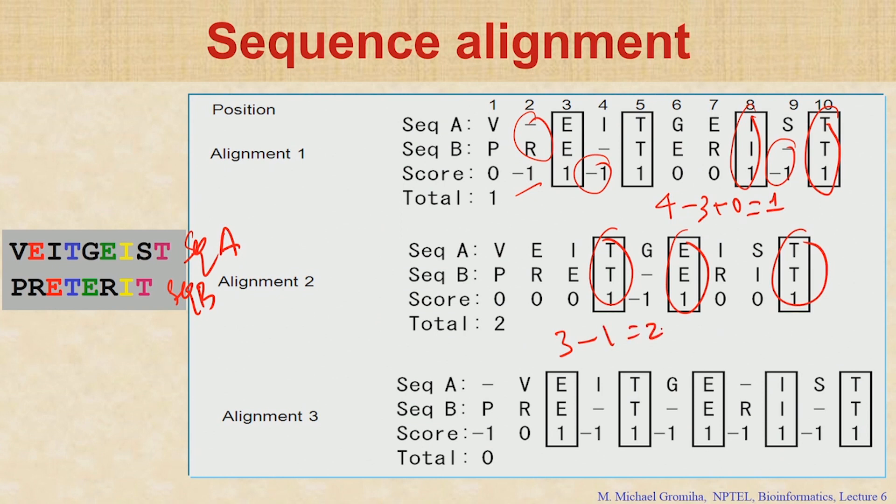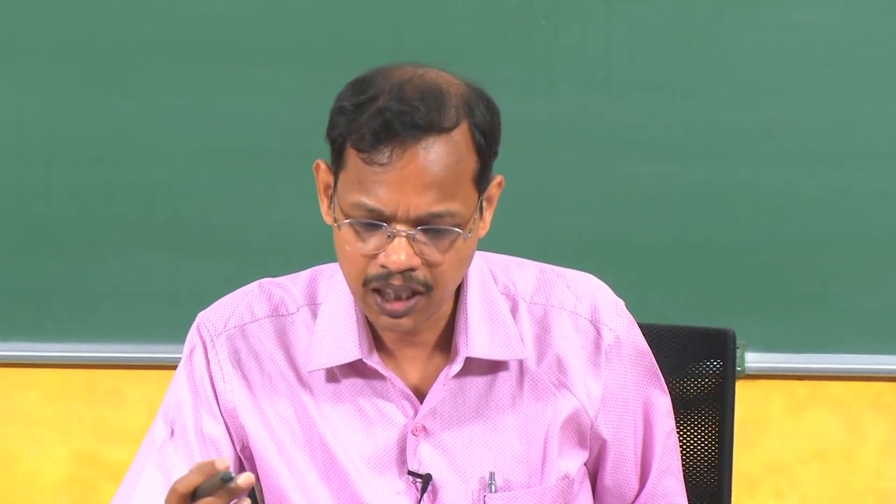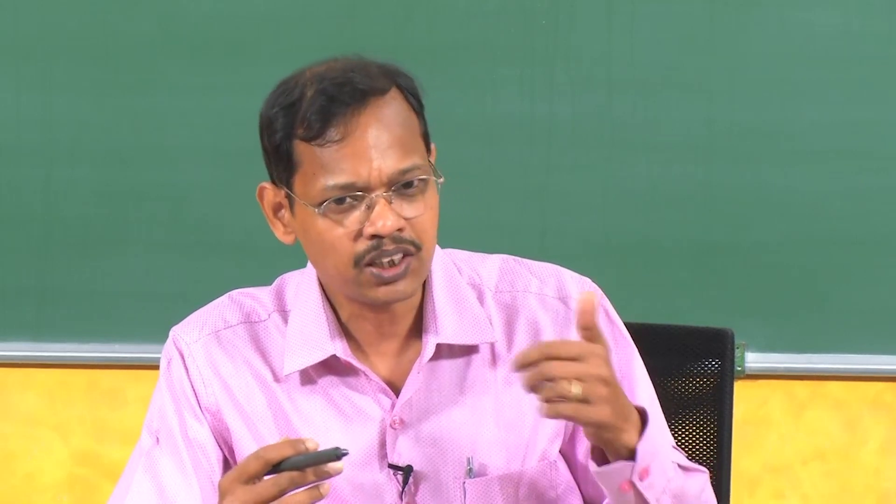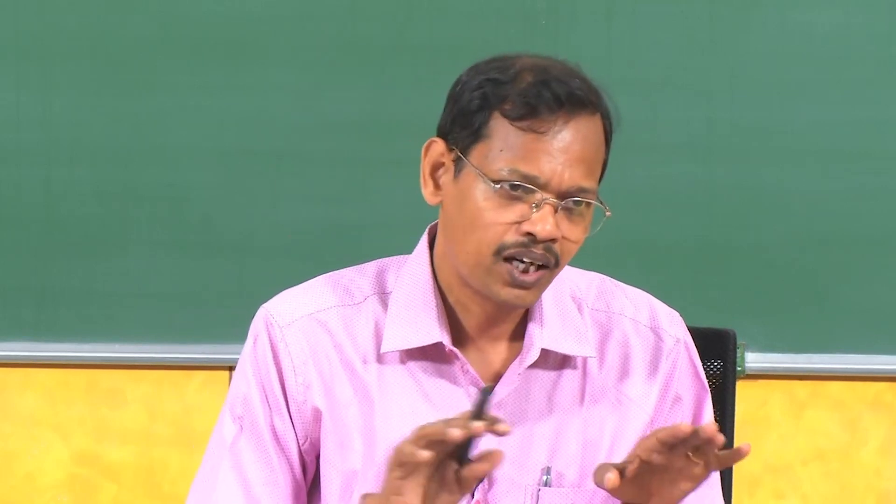If you compare the alignment between 1 and 2, the difference is gaps. Because of the gaps we give the penalty. This is why alignment 2 is better than alignment 1. So we try to minimize the gaps and maximize the score. This we can do in several different ways.